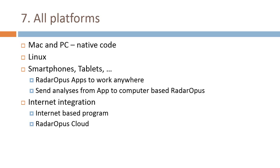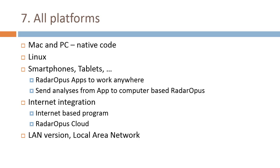Internet integration in these last 20 years has become very big. We are dreaming of an internet-based version, and as explained, we already have a RADAR OPUS cloud. Also, a LAN version will come — a local area network version — which will allow people to collaborate easily in a hospital with several computers.